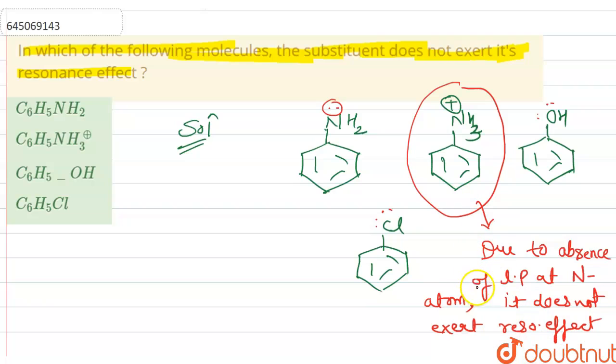Okay, so due to absence of lone pair at nitrogen atom, it does not exert resonance effect. But here, lone pair is with conjugation of double bond, so resonance will be occurred here in case of another here, and in this same case will be occurred here.